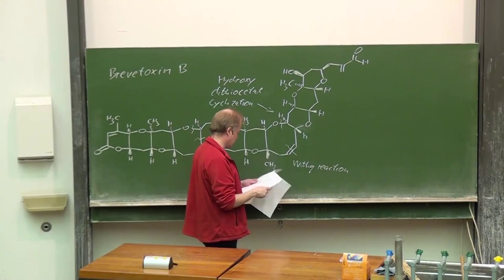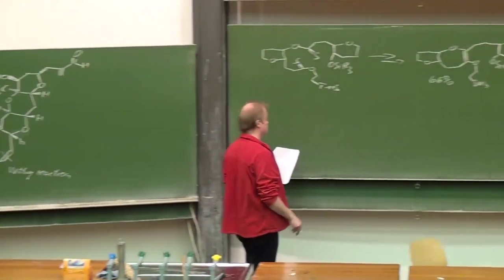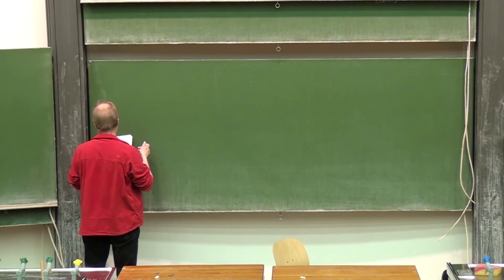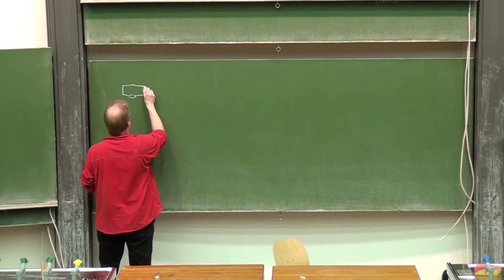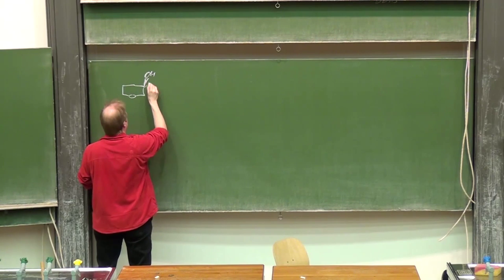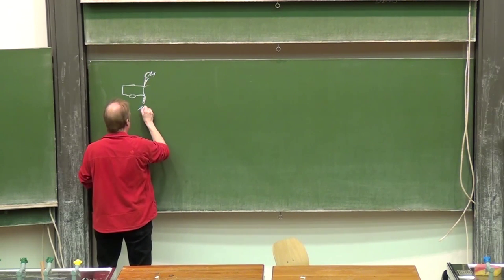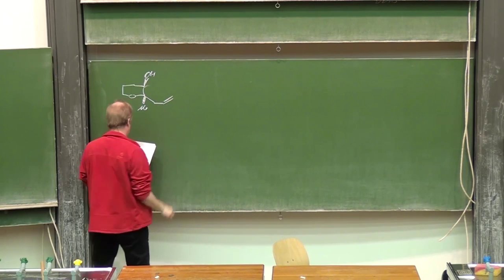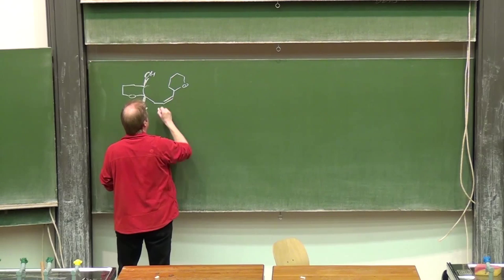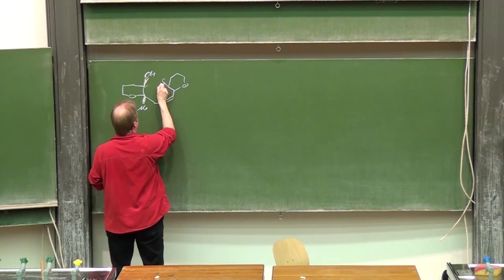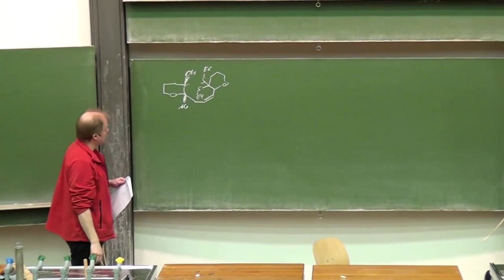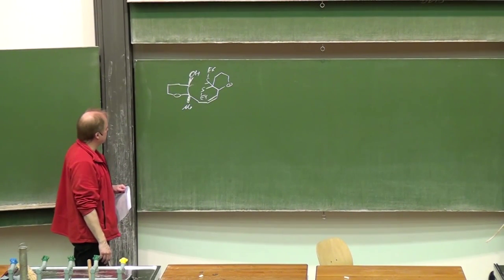The so-called hydroxy-dithioacetyl cyclization was chosen as the method to form this bond. Let's have a look at the model study for this reaction. Here we have a hydroxy group, and that cis-olefin formation works just fine with a Wittig-type reaction. And here we have this dithioacetyl group.